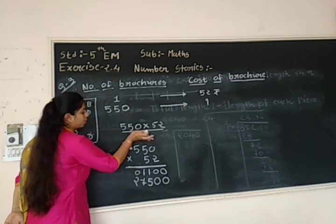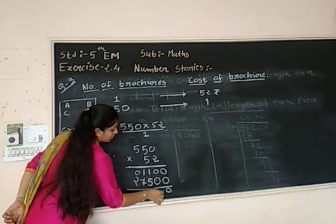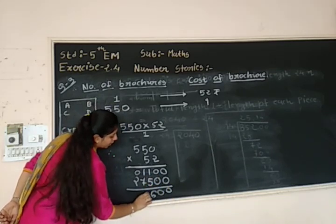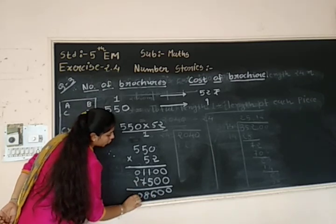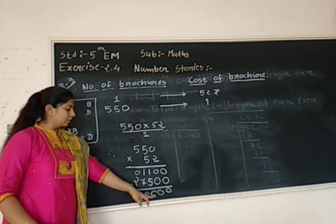Put 1 zero here. So balance the digits. Now perform addition. 0, 0, 5 plus 0 is 5, 1 plus 5 is 6, 7 plus 1 is 8, and 2 plus 0 is 2. So what is the answer? 28,600.